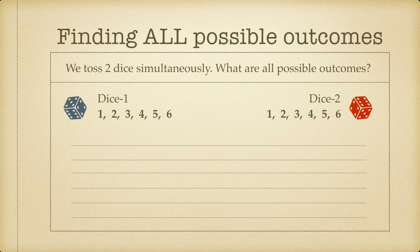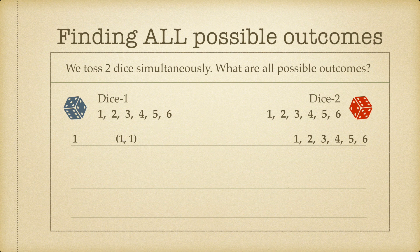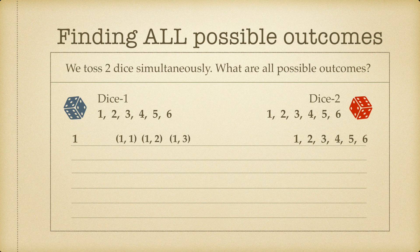Let's say we roll both dice together and we get the number one on dice one. Dice two can have any of the six values. We write each outcome in brackets: (1,1) — the first number represents dice one and the second represents dice two. So the outcomes are (1,1), (1,2), (1,3), (1,4), (1,5), and (1,6). These are the six outcomes where dice one shows one.